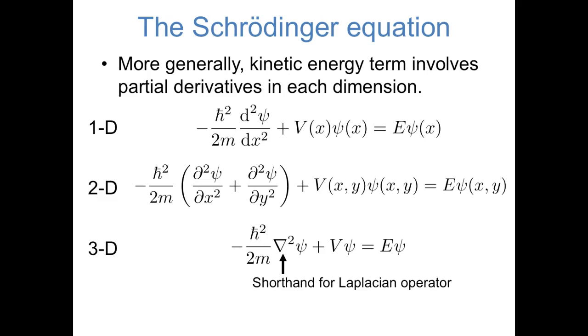Also, the term that was previously a second derivative with respect to X becomes a sum of second derivatives with respect to all of the spatial variables. And when you're in three dimensions, this term that's the sum of the second derivatives with respect to X, Y, and Z gets a special symbol and a special name. It's called the Laplacian operator and symbolized by this upside-down triangle squared. We'll see plenty more of this equation soon, and you'll have a lot of chances to practice using it.